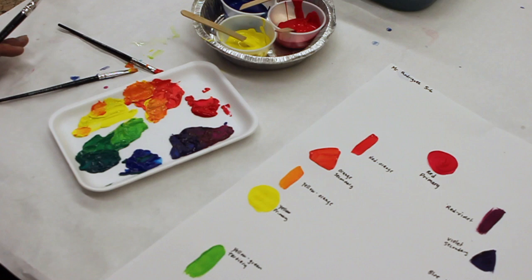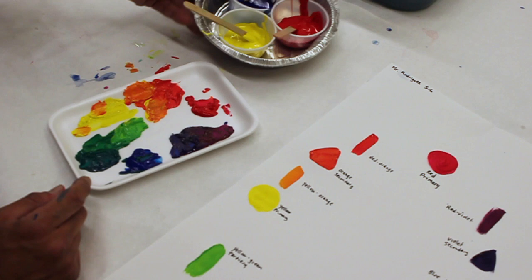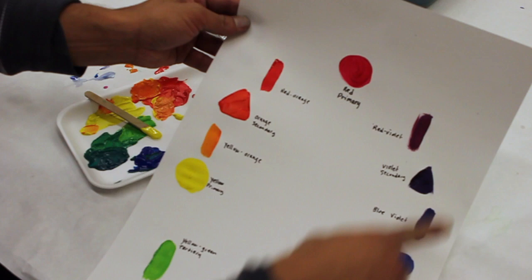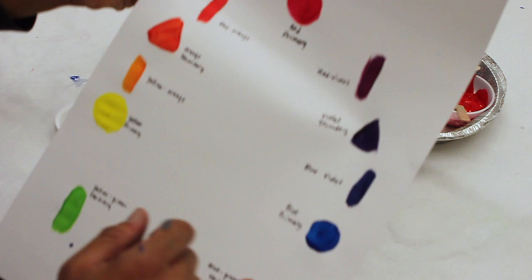All my brushes can go in the dirty brush container now. Notice my colors are still clean and pure. My name is on my paper, my group number. All the 12 colors mixed from just three. And all of my colors are labeled. Actually, some of my tertiaries are labeled. So I'm going to go ahead and label them now.